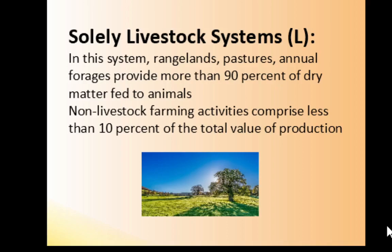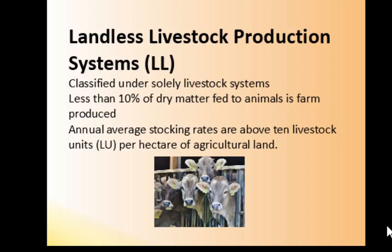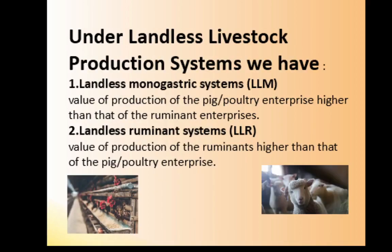The landless livestock production system is a subclassification under solely livestock systems. Less than 10 percent of the dry matter fed to animals is from the farm, and the annual average stocking rates are above 10 livestock units per hectare of agricultural land. An example of this would be a feedlot.